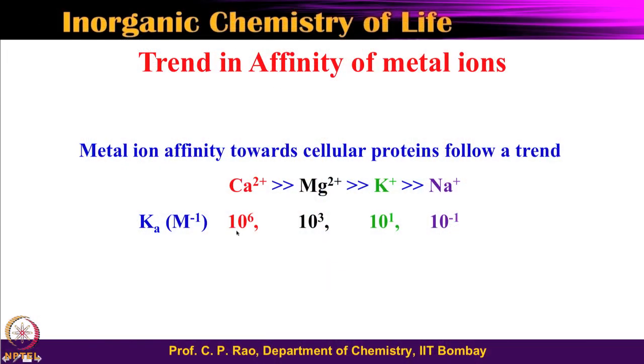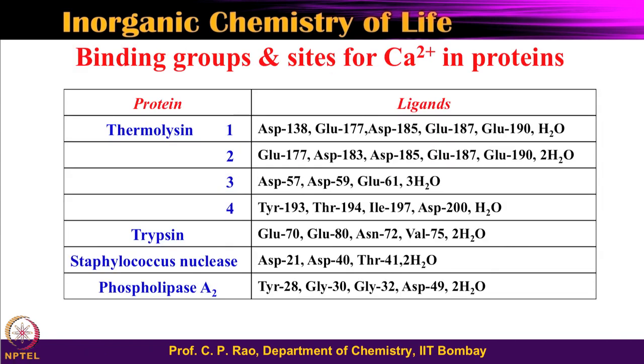Among all four, sodium+ is the weakest and calcium 2+ is the strongest, and their affinity makes a difference in activating proteins accordingly. Calcium is in the range of 10^6 mol⁻¹, 10^3 for magnesium, 10^1 for potassium, and 10^-1 for sodium — about 1000-fold, 100-fold, and 100-fold differences. There is quite a large fold difference between sodium and calcium, which reflects in the activity of enzymes.